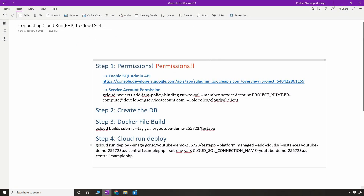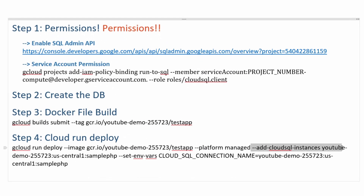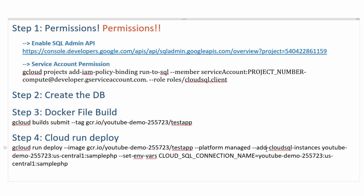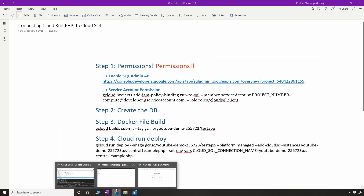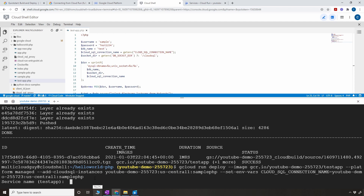The command to deploy is 'gcloud run deploy', specifying the image from gcr.io, with platform set to managed Cloud Run. Here is the most important thing: you're going to tell Cloud Run to connect to the Cloud SQL instances using the '--add-cloudsql-instances' flag. This is where a lot of people run into issues — if you don't add this, you cannot connect to Cloud SQL. The value is the connection name from the SQL console. Then pass the environment variable 'CLOUD_SQL_CONNECTION_NAME' which is used in the PHP file.